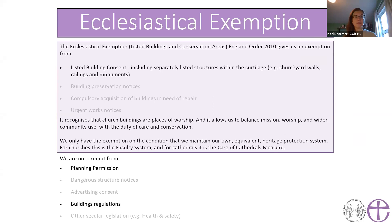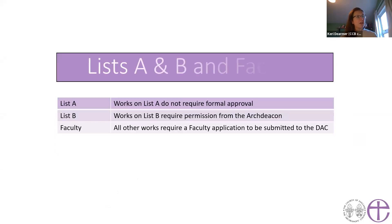We only have the exemption on the condition that we maintain our own equivalent heritage protection system instead of applying for listed building consent. For churches, that is the faculty system; for cathedrals, that is the Care of Cathedrals Measure. We're not exempt from everything — you still have to apply for planning permission, building regulations, and other secular legislation. The faculty system is divided into three sections: List A, List B, and full faculty.